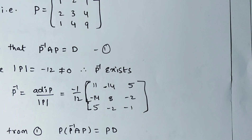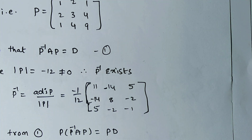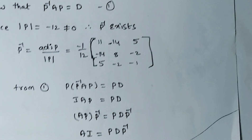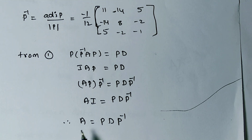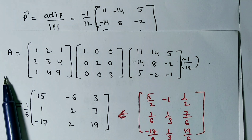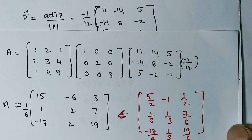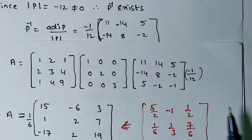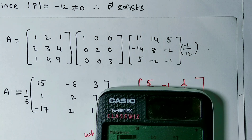We have P⁻¹AP = D. Multiplying both sides by P on the left: P·P⁻¹·A·P = P·D, which gives IA·P = P·D. Then multiplying both sides by P⁻¹ on the right: A = P·D·P⁻¹. Now substitute the known values of P, D, and P⁻¹.